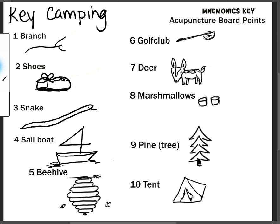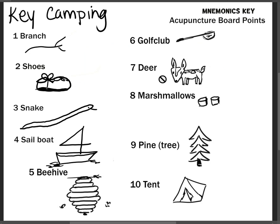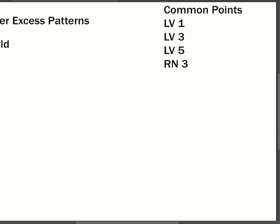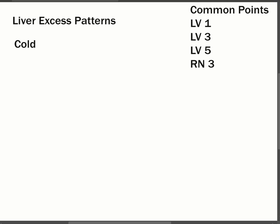So you keep writing them. You're not sure maybe when you're going to need them or use them. Let's take a look at an example and making it work. So we have liver excess pattern cold. We have liver one, liver three, liver five, and ren three. So we're going to make this come to life as a picture.